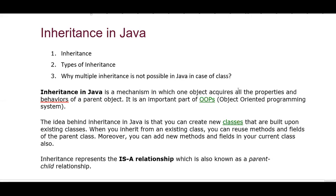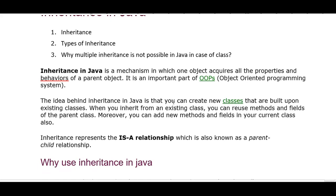Here is unit number two: inheritance in Java. Inheritance in Java is a mechanism in which one object acquires all the properties and behavior of a parent object. It is an important part of OOPs - Object Oriented Programming System. Inheritance is a concept in which we have all the properties of one object - variables and methods - that we can acquire in another class.